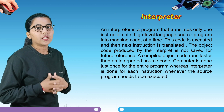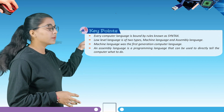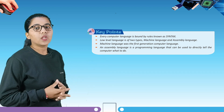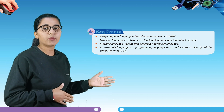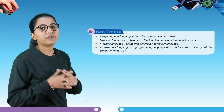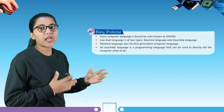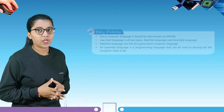Let's have a quick look at some key points from this chapter: every computer language is bound by rules known as syntax; low level language is of two types — machine language and assembly language; machine language was the first generation computer language; an assembly language is a programming language that can be used to directly tell the computer what to do. This is it from this chapter. Soon we are going to learn many more interesting chapters of computer. Till then, revise what we learned today. Thank you.